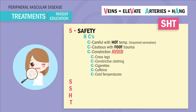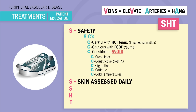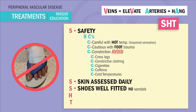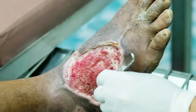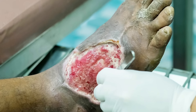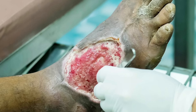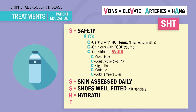Our second S is for skin — teach patients to assess their skin daily. The third S is for shoes that are well fitted — a huge NCLEX tip. No sandals, since patients have impaired feeling and we want to protect the feet from injury. If the feet are injured, that low circulation means slow repair and long-term wound care. H is for hydration, which makes blood less thick and less likely to pool in the extremity, making it easier for veins to vacuum it back and arteries to pump away.